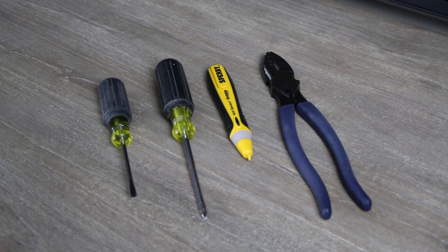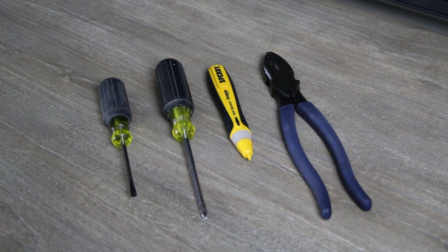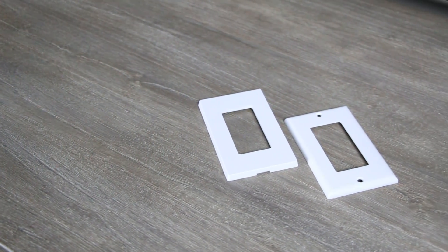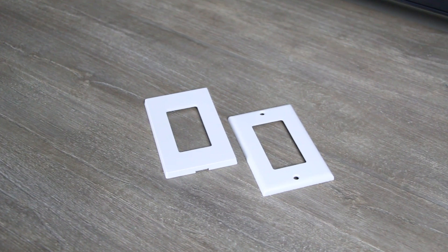To install, you will need a flathead screwdriver, a Phillips screwdriver, a voltage detector, and pliers. The iDevices Wall Outlet fits any standard size rocker faceplate, so you can select one that works best for your home.